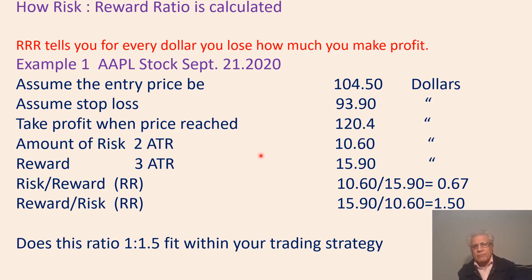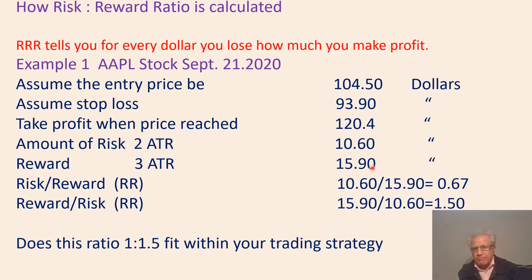Please look at my YouTube video on Average True Range (ATR) so you know what I'm talking about and how to read ATR from the chart. The reward I chose is 3 ATR, which is $15.90 — you can choose 5 ATR, 4.5 ATR, or 2.5 ATR depending on your trading strategy. If you deduct $10.60 from $104.50 you get $93.90, which is the stop loss. If you add the reward to $104.50 you get $120.40. So the risk-reward ratio is $10.60 over $15.90, which gives you 0.67.